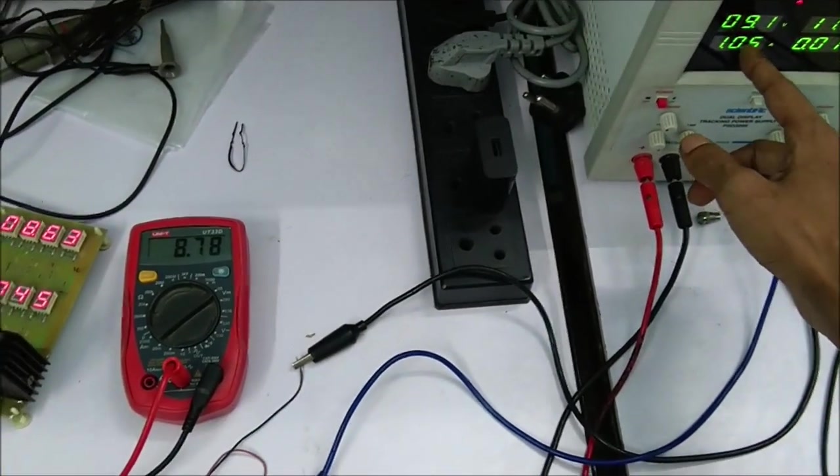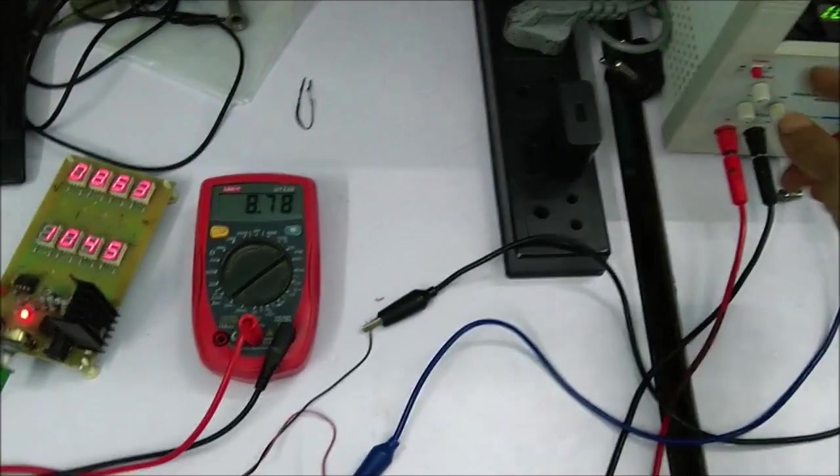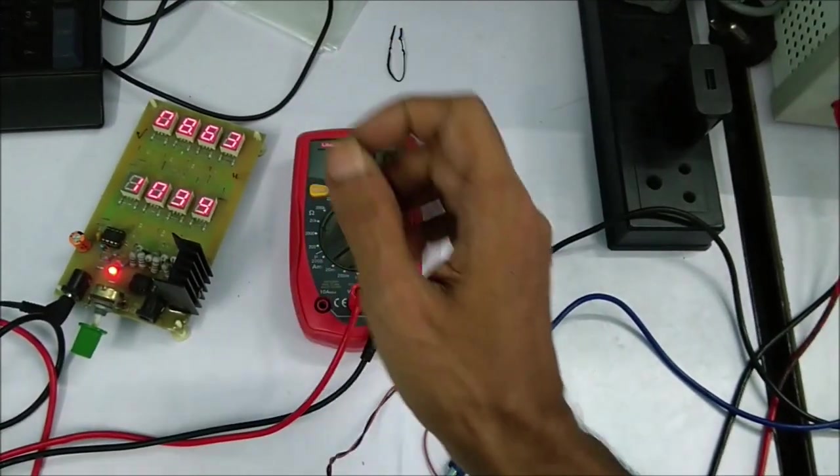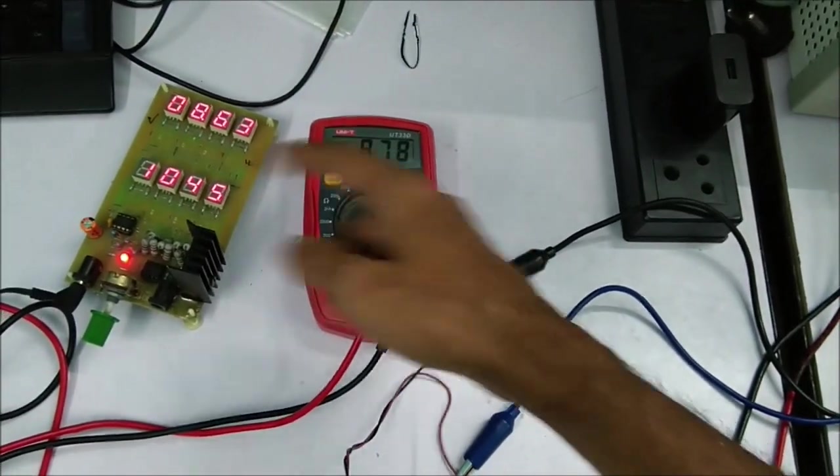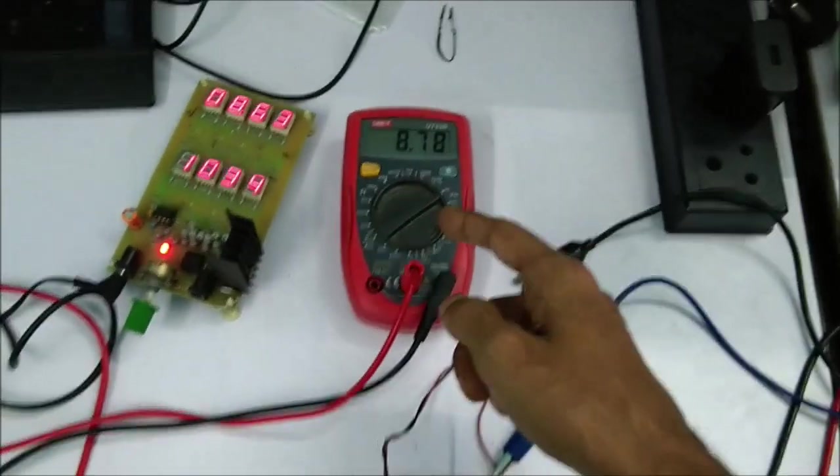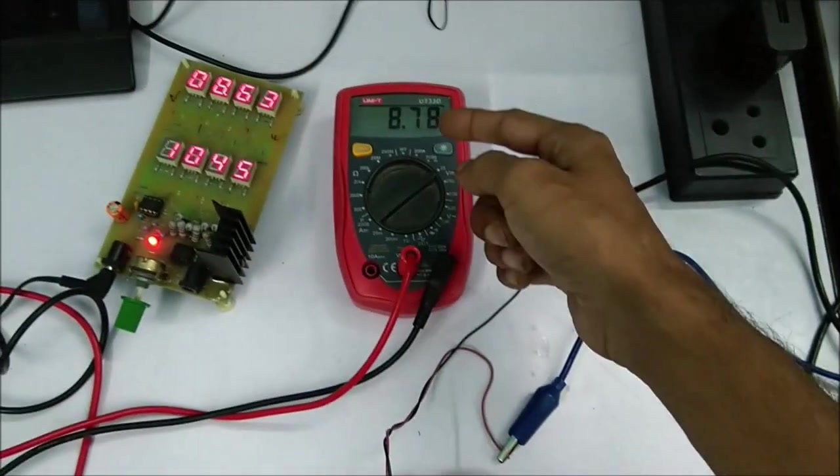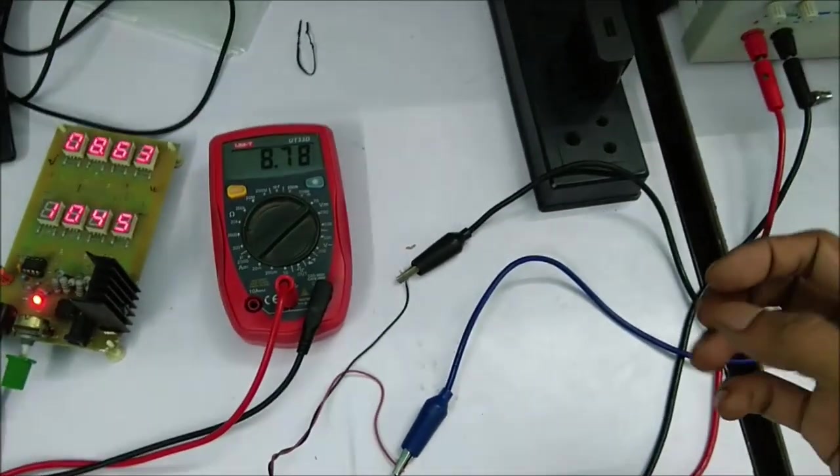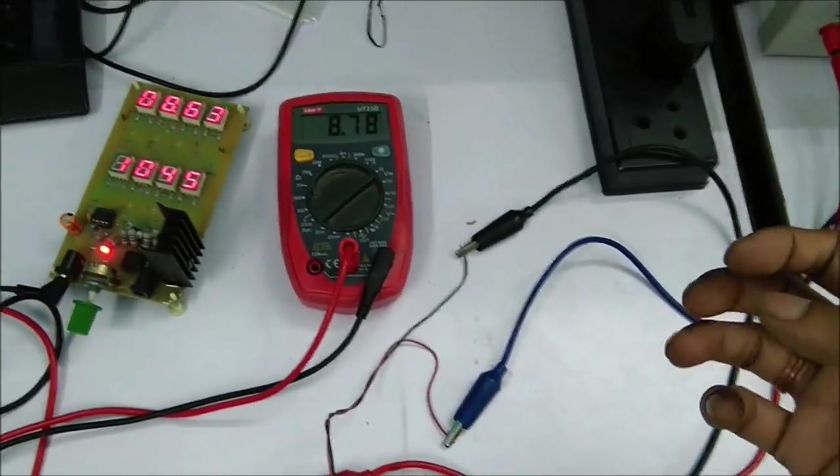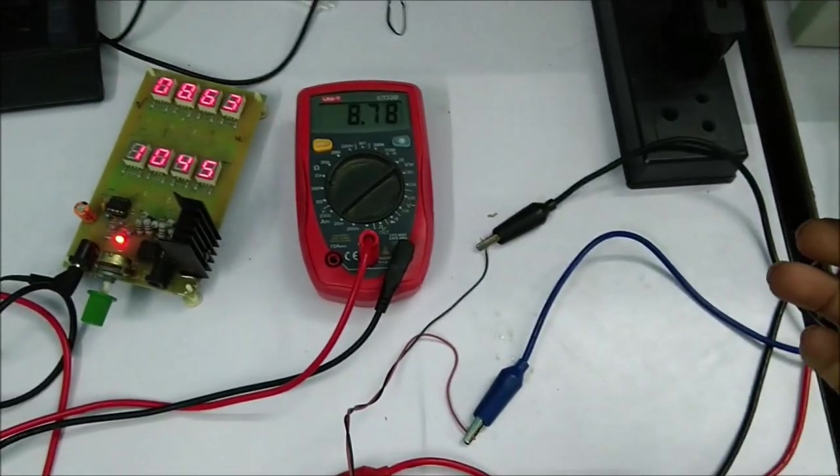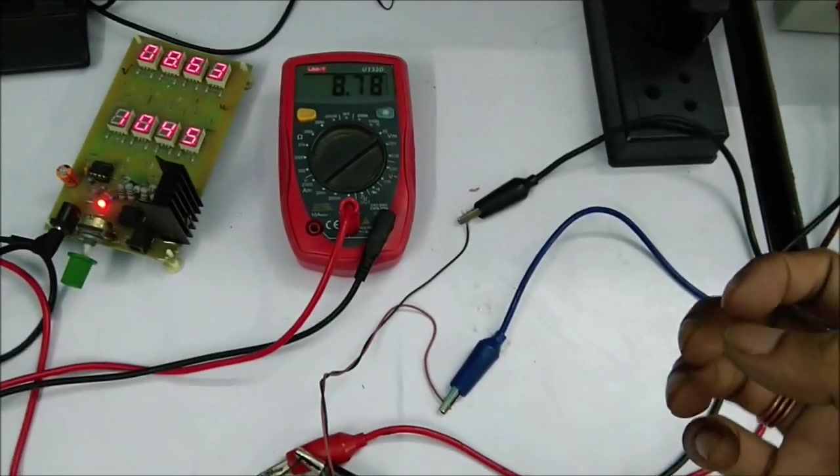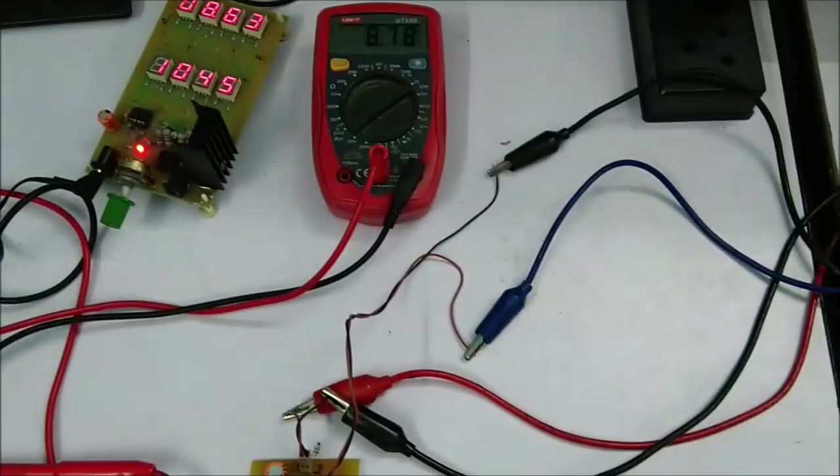As you can see, 1.05 amperes is showing, which is close to what's displaying in the load system. The output voltage is now 8.78 volts. Now let's assume the wall adapter is reconnected and power is regained.